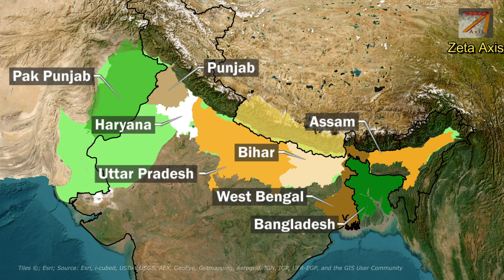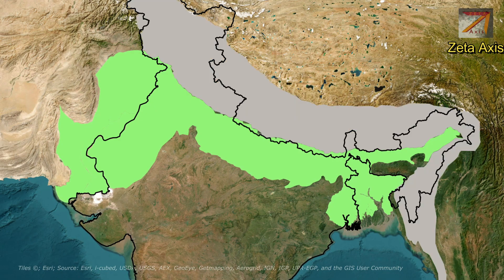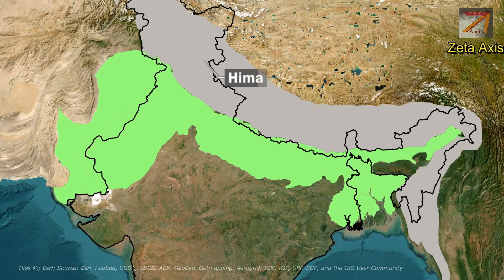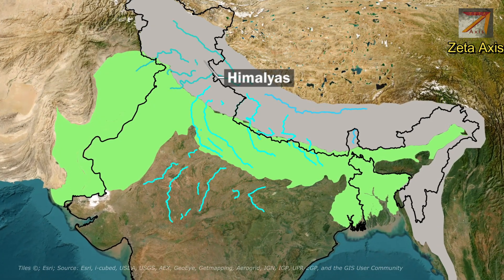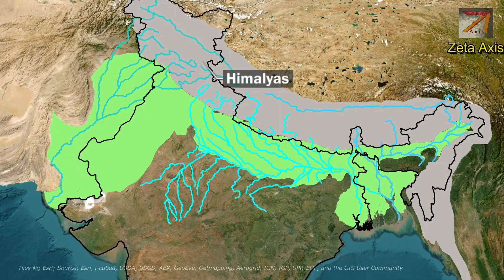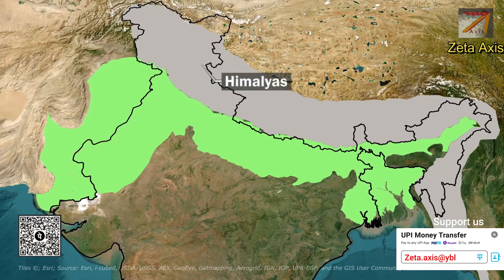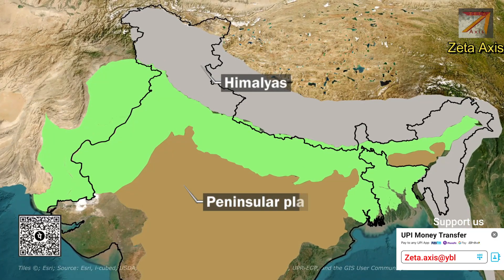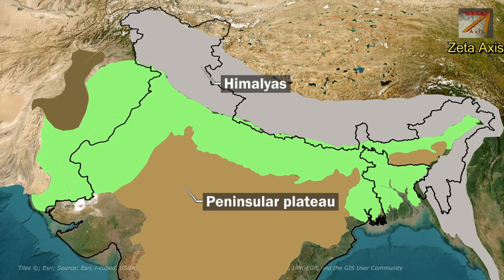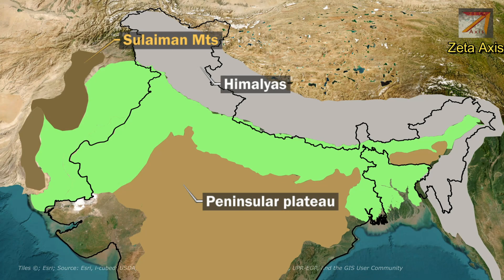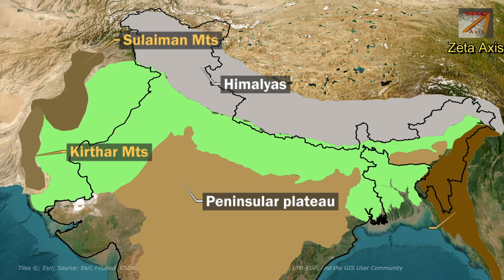The southern parts of Nepal are also part of the Northern Plains. The Northern Plains is bounded on the north by the Himalayas, which provide water to numerous rivers and are the source of fertile alluvium deposits across the region. The southern edge is marked by the Deccan Plateau, and on the west are the Suleiman and Kirthar mountains, while the eastern side is flanked by the Northeast Himalayas or Purvanchal Himalayas.